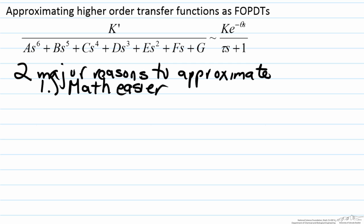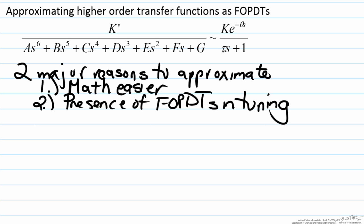The second reason is the presence of FOPDTs in tuning. In a number of situations, in order to develop the appropriate tuning parameters, whether it be the controller gain k sub c, the integral time tau sub i, or the derivative time tau sub d, oftentimes in order to use these tuning parameter methodologies, it requires the development of a FOPDT, and if your process is higher order, this can become problematic.